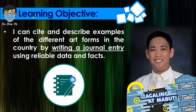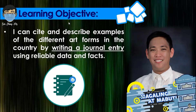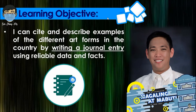At the end of this session, or after you accomplish your second learning module, you are expected to cite and describe examples of the different art forms in the country by writing a journal entry using reliable data and facts. In the first learning module, you did the reflection paper; this time, the last part of your learning journey for this week involves writing a journal entry. You must use only reliable data and facts, so be careful in finishing your final output of the week.